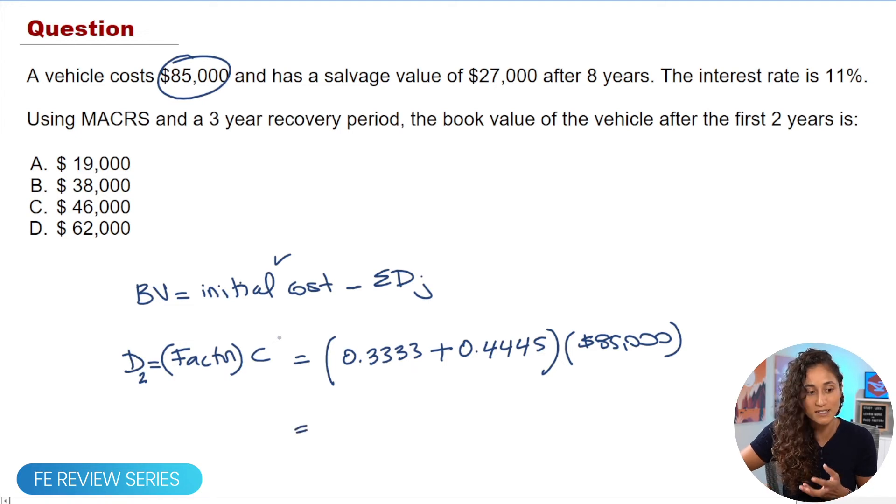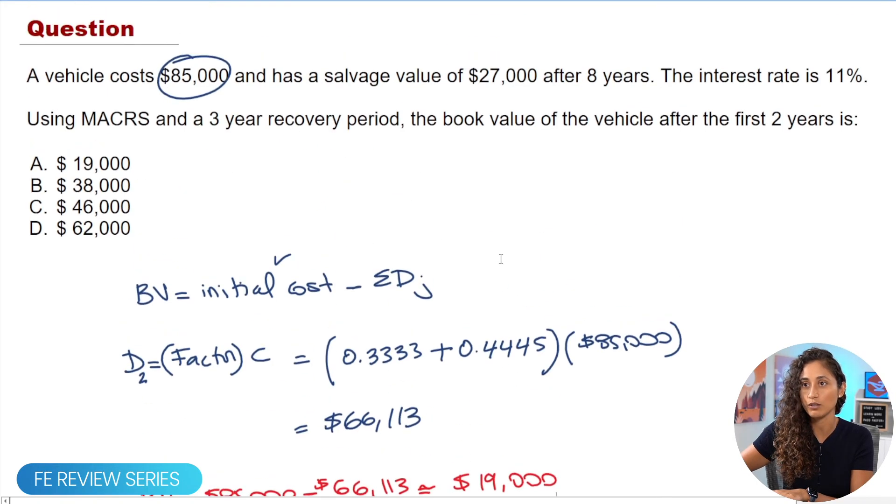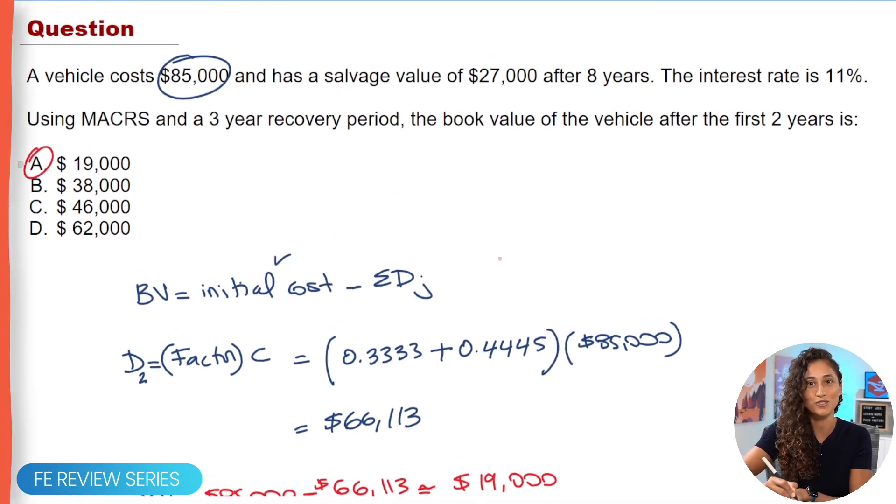If you guys plug in these numbers in your calculator, you're going to get 66,113. Now the book value is just going to be the initial cost, which is $85,000, and then we're going to do minus depreciation, which is 66,113. If you guys plug in these numbers in your calculator, you're going to get about $19,000. And if we take a look at the multiple choice, the answer is going to be D.